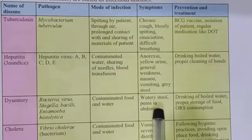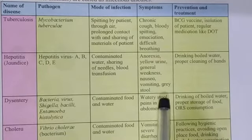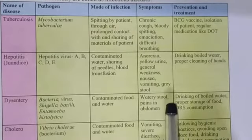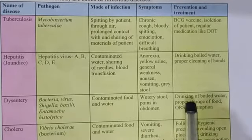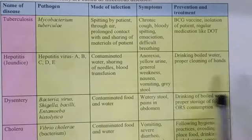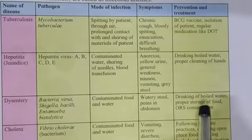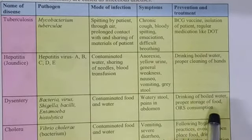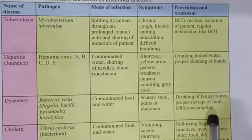What happens when there is dysentery? Watery stool — the person has to go to the washroom again and again and the stool is watery. Pains in the abdomen — too much pain. How can it be prevented? Drinking boiled water, because the disease spreads through contaminated water, so those organisms will not enter our body. Proper storage of food. And ORS consumption as treatment.